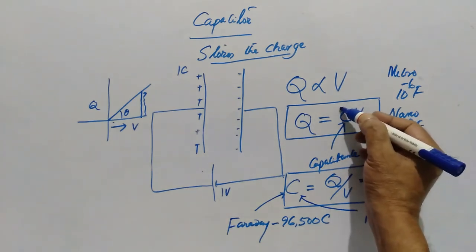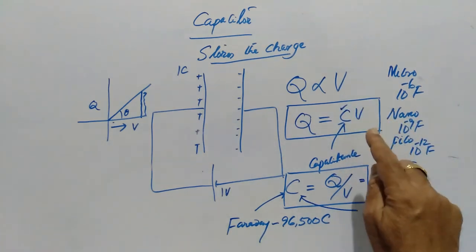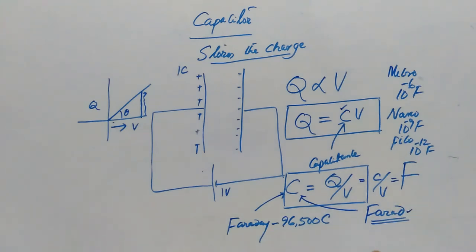Capacitance is a constant for that particular capacitor. The unit for capacitance in SI system is Farad.